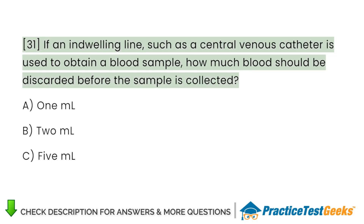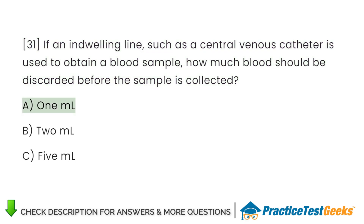If an indwelling line, such as a central venous catheter, is used to obtain a blood sample, how much blood should be discarded before the sample is collected? A. 1 ml. B. 2 ml. C. 5 ml.